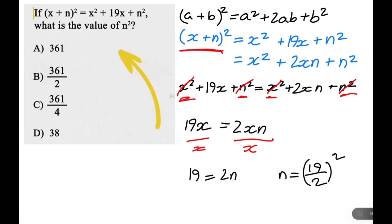So 19 squared, you can put it into a calculator if you want. It's 361. So let's just put 19 over 2 squared is equal to 361. And then 2 squared is 4, so we have over 4. And that is our final answer to our question, C.